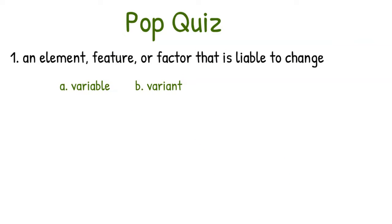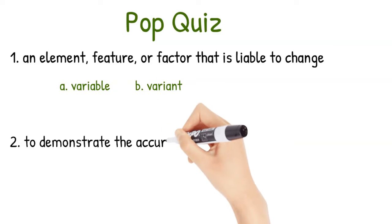Number one, an element, feature or factor that is liable to change. Is that A, a variable or B, a variant?